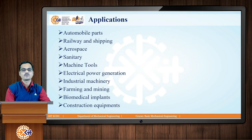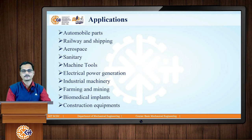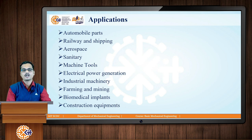Advanced applications include biomedical implants and artificial limbs made from super alloys, manufactured using investment casting techniques. Construction equipment is also manufactured using casting. Additionally, art, decoration, and jewelry are areas where metal casting is used as a manufacturing process.